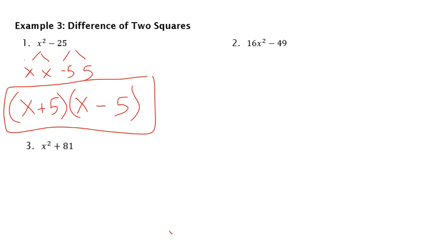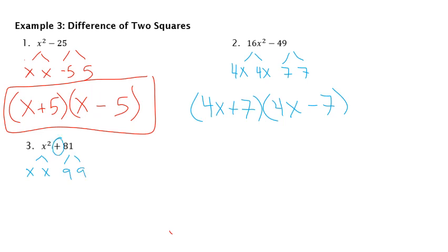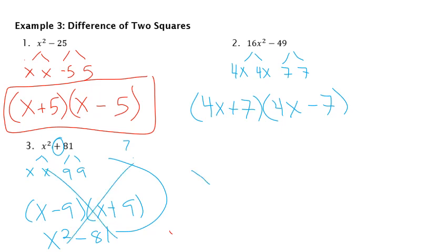Same with question number two. So 16 is a perfect square. So I have 4x and 4x. 49 is 7 and 7. One's going to have a plus, one's going to have a minus. And that's my final answer. For the last one, you actually have that these are perfect squares. But a big issue you're going to have is this is an addition sign. So if I do x minus 9, x plus 9, when I multiply that back out, I'm going to get x squared minus 81. And these are not the same. So this is actually what we call prime. So you would actually either rewrite the number or you would write that it's prime. So there's no value or divisor that goes in there.